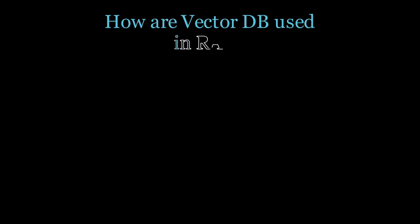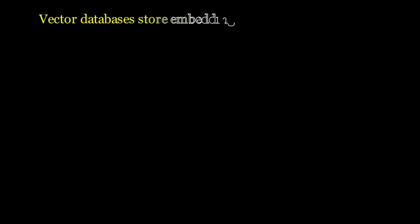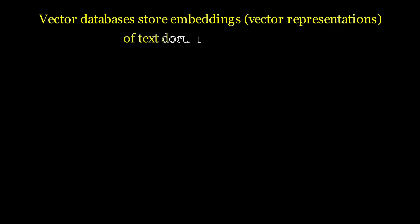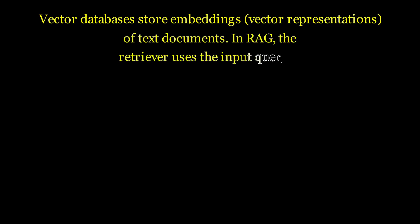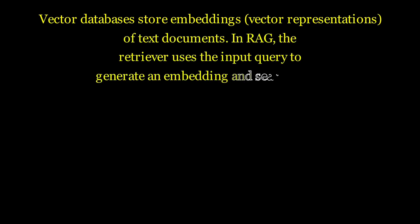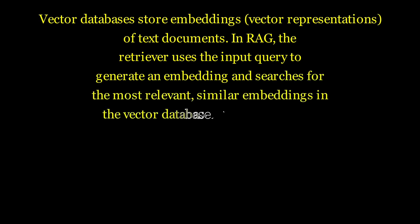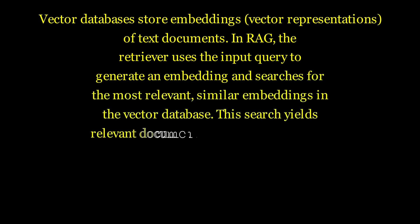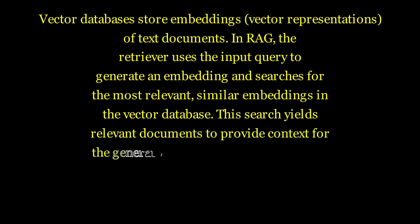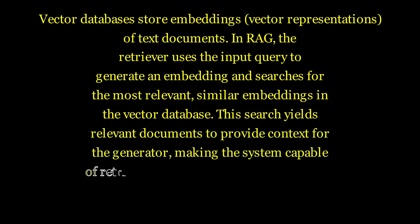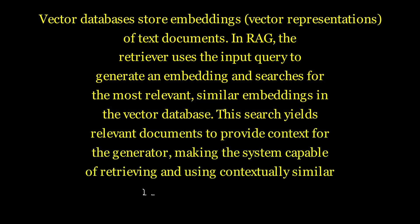How are Vector Databases used in RAG? Vector databases store embeddings — vector representations of text documents. In RAG, the retriever uses the input query to generate an embedding and searches for the most relevant similar embeddings in the vector database. This search yields relevant documents to provide text for the generator, making the system capable of retrieving and using contextually similar information efficiently.